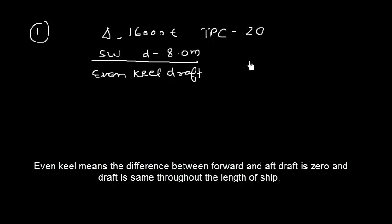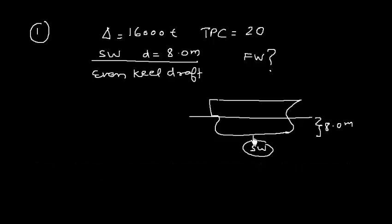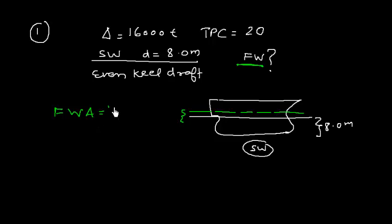We need to find the draft in fresh water. The vessel is floating at an even keel draft of 8 meters in salt water. In fresh water, which is lighter than salt water, the ship will sink and the draft will increase by some amount — that amount is the fresh water allowance. So we need to calculate the fresh water allowance.